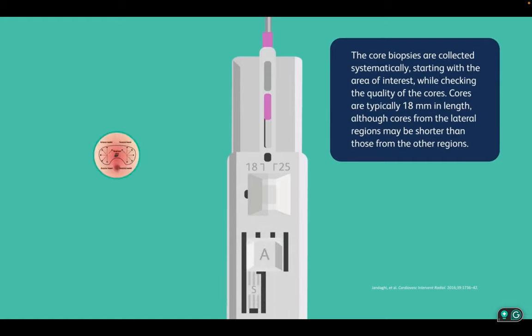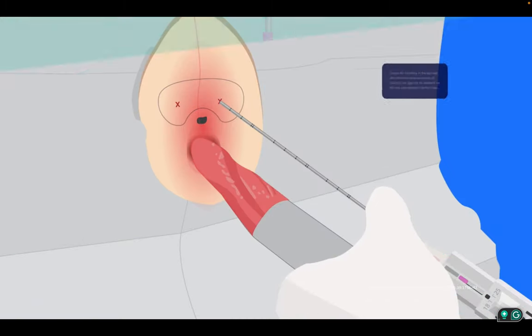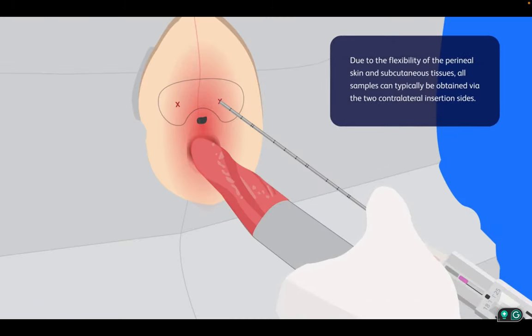Cores are typically 18 millimeters in length, although cores from the lateral regions may be shorter than those from the other regions. Due to the flexibility of the perineal skin and subcutaneous tissues, all samples can typically be obtained via the two contralateral insertion sites.